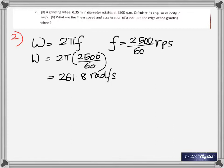That's the unit of angular speed: radians per second. Then you look at part (b): what are the linear speed and acceleration of a point on the edge of the grinding wheel? Now you're asked to find the linear speed, so you have to know the relation between angular speed and linear speed. The relation is: linear speed equals angular speed multiplied by radius.